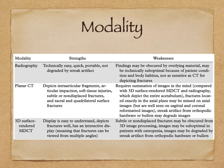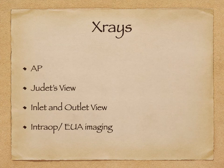The 3D surface rendered MDCT is easy to understand, depicts fractures very well, and is easy to rotate and understand the anatomy. However, even in these cases you can miss subtle or non-displaced fractures, and images can be degraded by streak artifact from orthopedic hardware. The imaging techniques used include plain AP x-rays, Judet views, inlet and outlet views, and intra-operative examination under anesthesia.